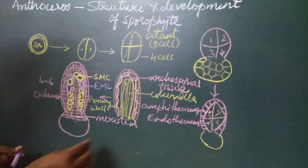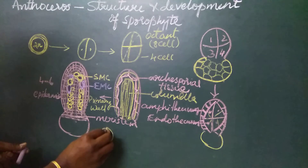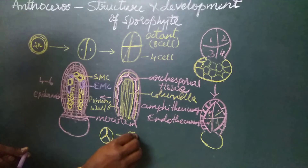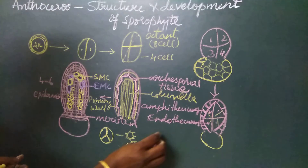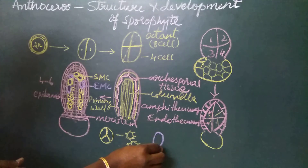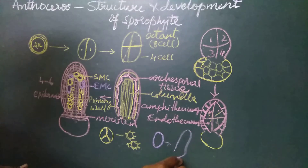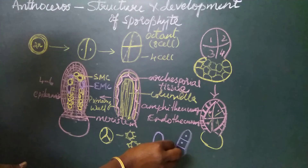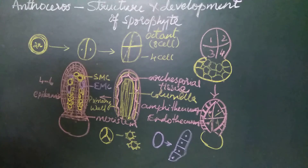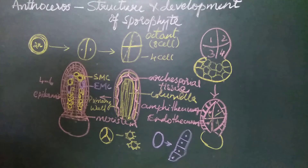The sterile cells are called elator mother cells. The spore mother cells undergo reduction division — they divide meiotically to form spore tetrads. The elator mother cells cannot undergo meiosis; they simply elongate, become irregular, and divide two to three times to form three to four cells. They do not develop any thickening on their surface. Because of the absence of spiral thickenings — unlike what is seen in Marchantia — these elators are called pseudo elators.